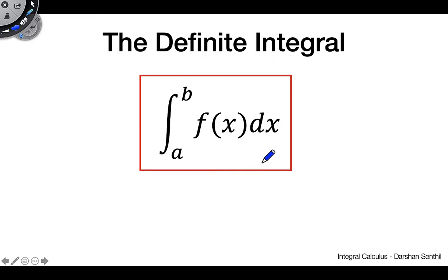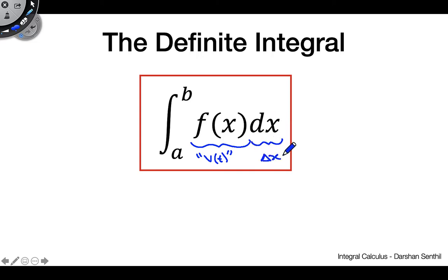Let's talk through each piece of the definite integral. We have f(x) — that's our v(t), our velocity function — we're finding the area under that. This piece is called the differential, and it represents the delta x we used: that uniform width from the Riemann sum. We use dx instead of delta x because we made that width so small — stuffing infinitely many rectangles into the interval — it becomes almost negligible. dx represents an infinitely small width.